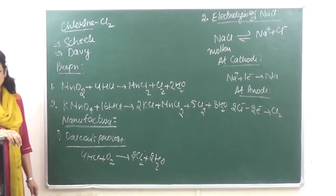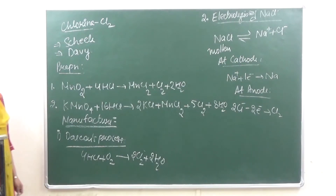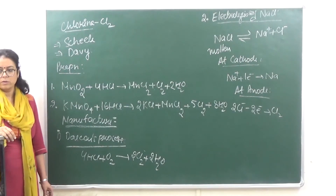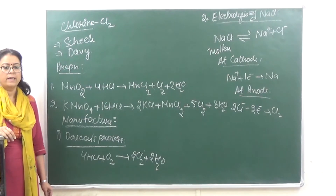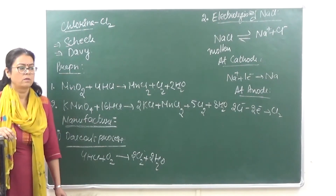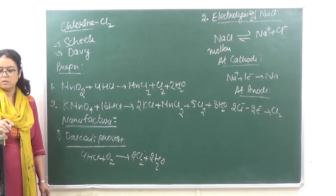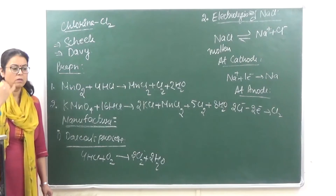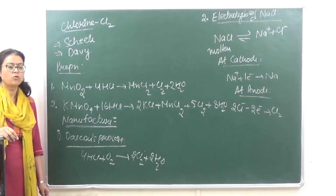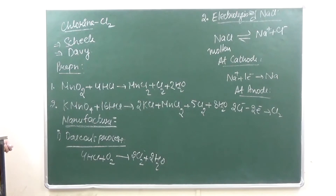Now let's look at the properties of Chlorine. Number one: it is a greenish-yellow gas. Number two: it has a strong, pungent and suffocating odour. Number three: it is a poisonous gas. Number four: it is soluble in water, and its solution is called chlorine water.